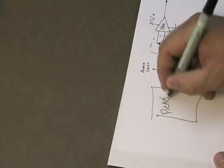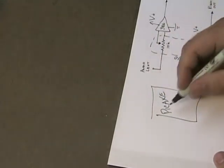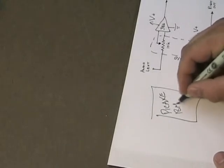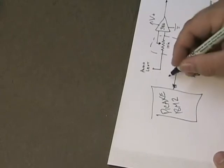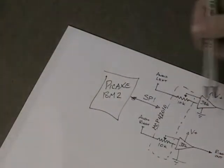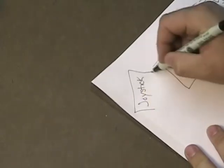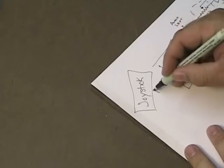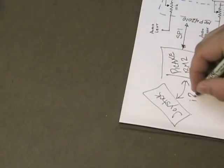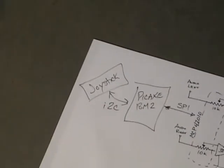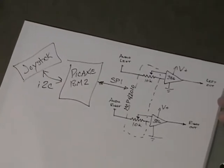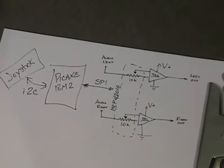So my Pickaxe is going to talk to the Microchip device with SPI to control the volume. On my end on the human interface, I'm going to use a joystick and this will communicate via I2C. So that's pretty simply the circuit.